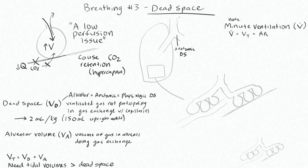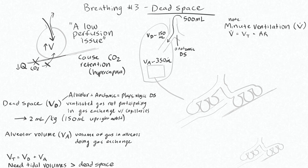Let's show that on this diagram. Say our tidal volume is 500 mL. This person will have the dead space of the average adult — about 150 mL — which is the combination of anatomic dead space and the alveolar dead space found in the rest of the lungs. The remaining 350 mL — that's 500 minus 150 — is our alveolar ventilation, VA. VA specifically refers to ventilation of the alveoli that are getting perfused, representing the volume of gas in the alveoli actually participating in gas exchange.